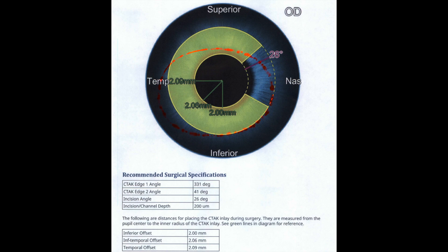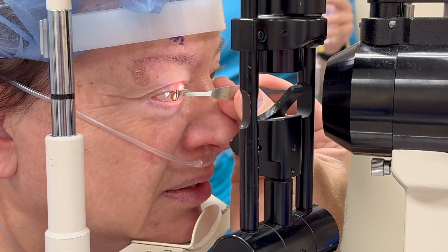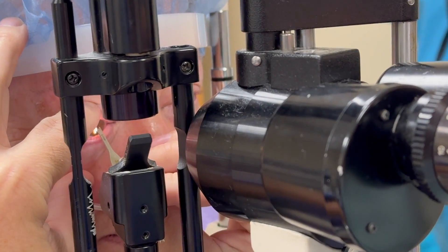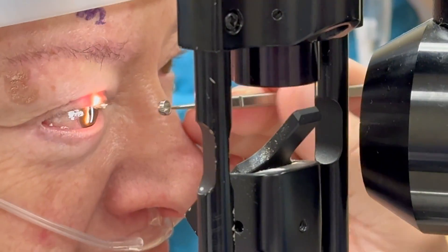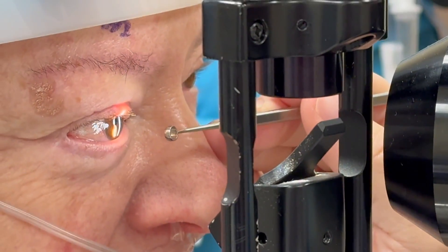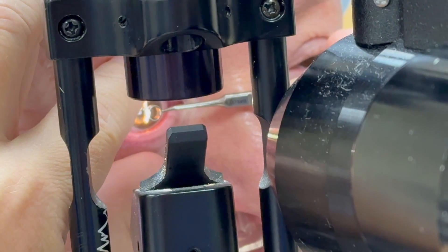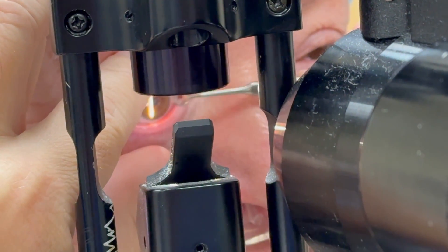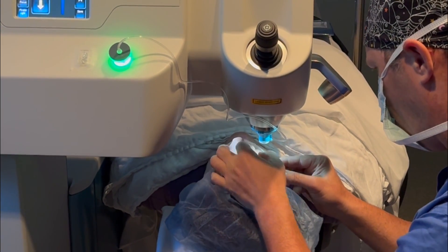This is the surgical plan sent by Corneagen, designed using Pentacam data. It shows where the CTAC segment is going to sit in the cornea and where the femtosecond channels need to be created, slightly decentered from the pupil center. I used a slit lamp to look at the center of the pupil, then used little sizing markers to mark two millimeters inferior and 2.09 millimeters temporal to the visual axis of the pupil center — all based on this surgical map. We then take a sizing ring with an inked marker, mark that center, and align it under the femtosecond laser.